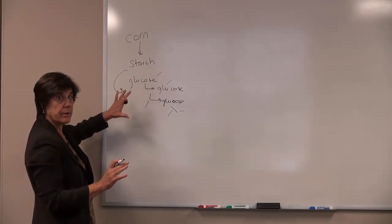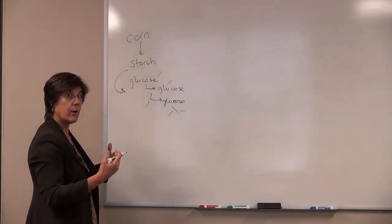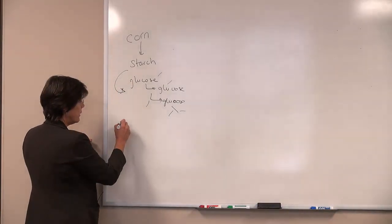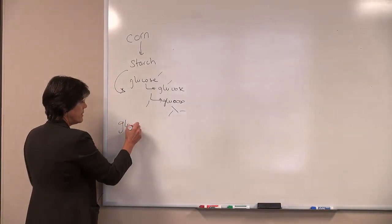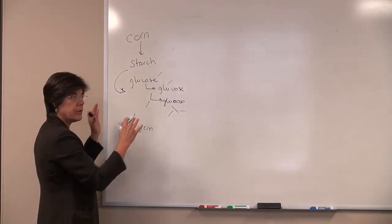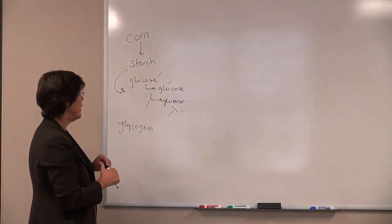Starch is very similar to the compound in our body where we store glucose called glycogen. It's very similar in structure - glucose molecules all linked together by bonds.